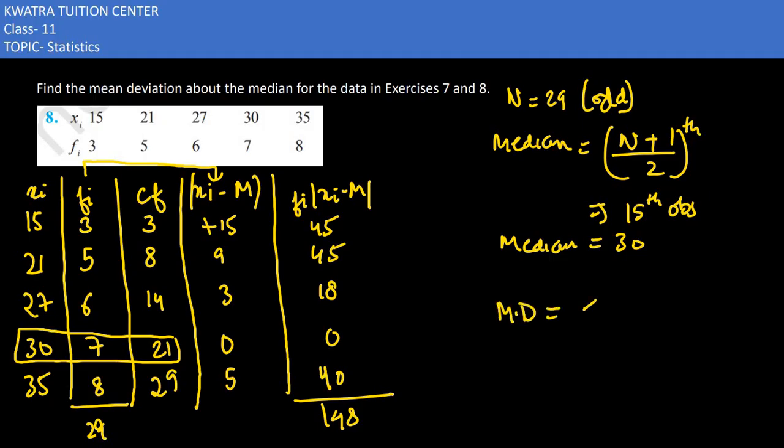Mean deviation. So just take the summation of FI times XI minus M divided by summation of FI. So how much value? 148. What will be the bottom value? It will be summation FI would be 29. So we have to divide 148 by 29, and approximate answer you would get is 5.1.